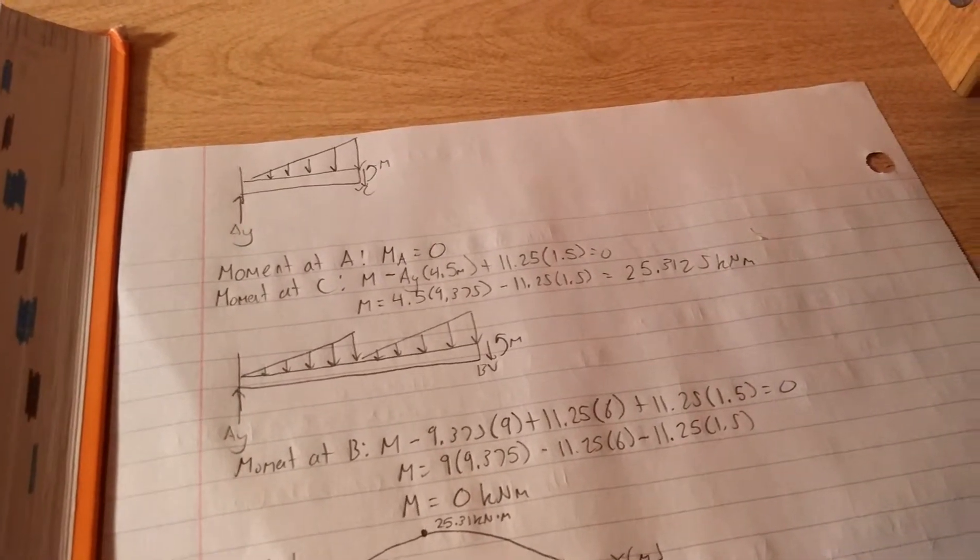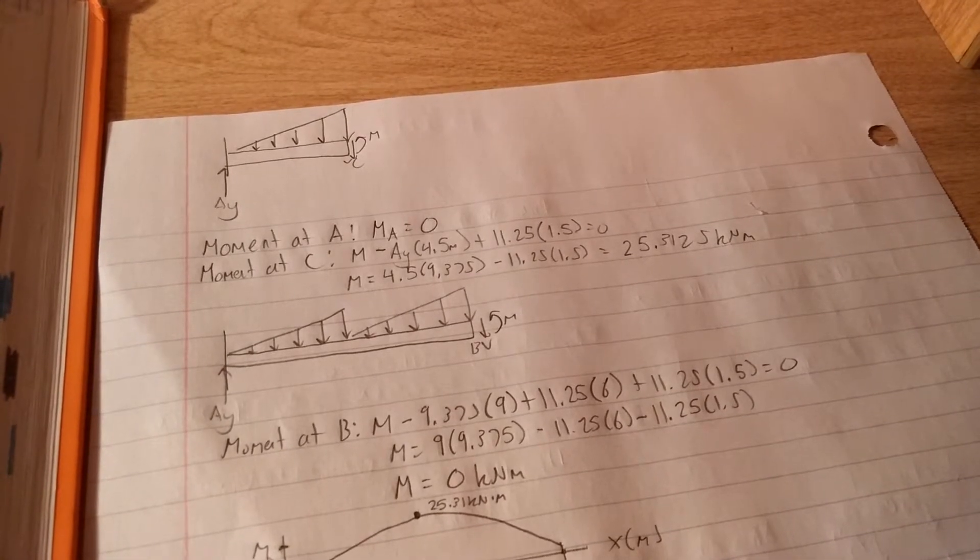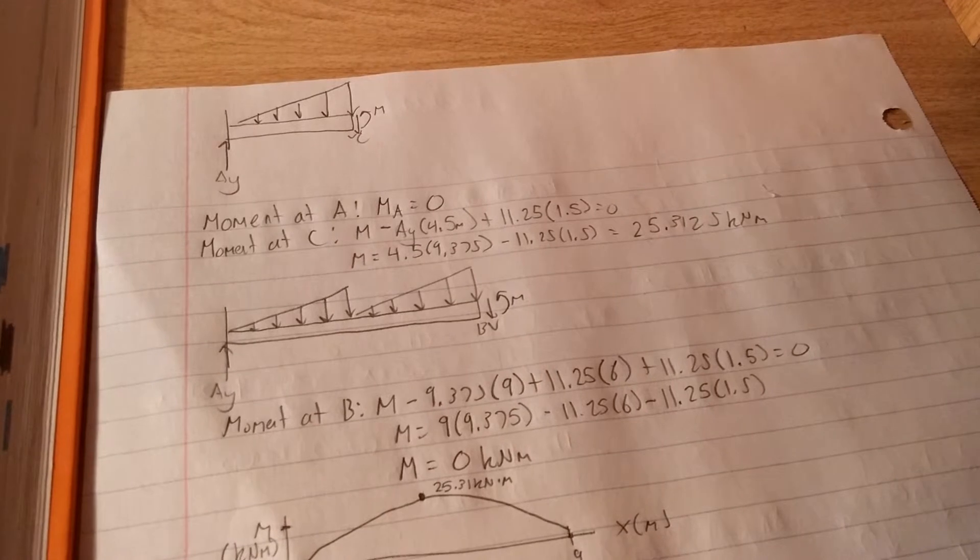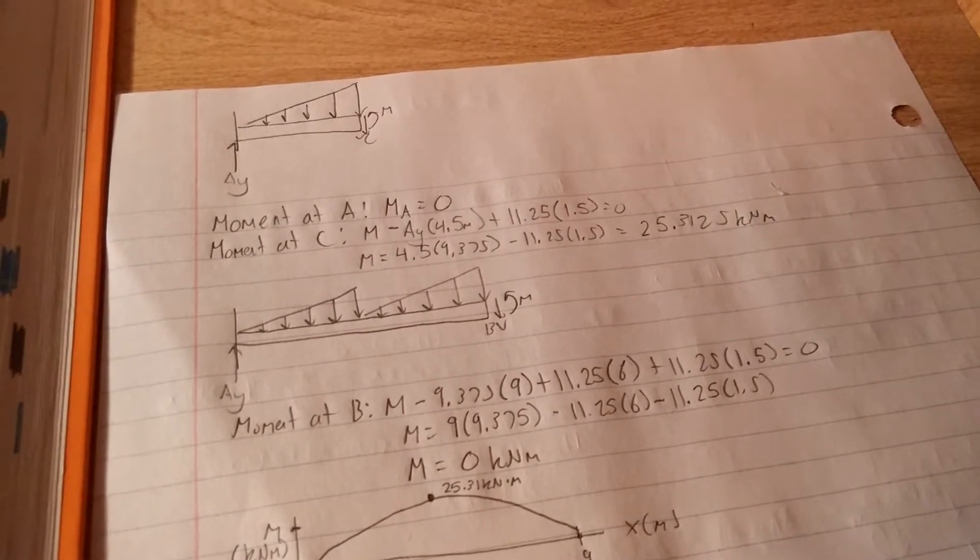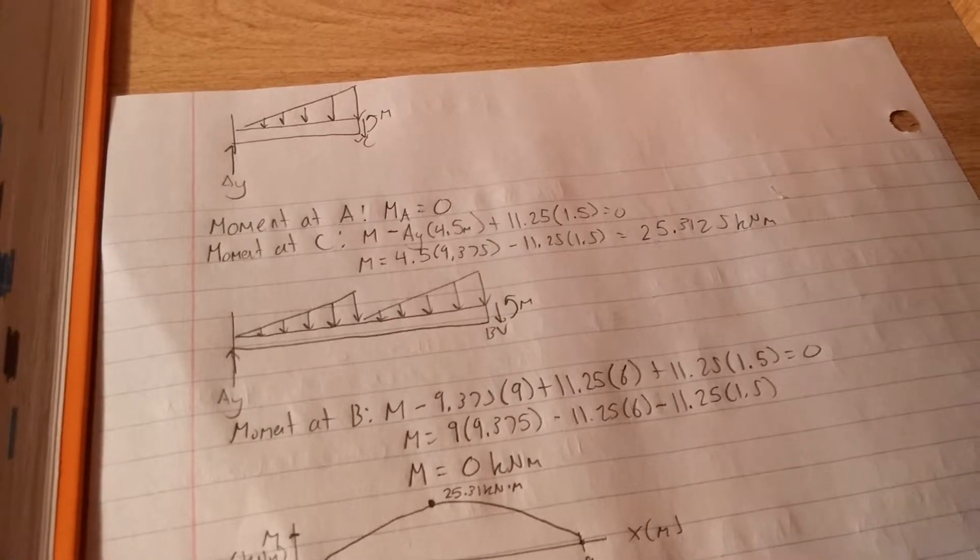And like I said, the centroid of a triangle is one-third from the base. So we multiply that by 1.5. Figure out the algebra, and you find that the moment at C is 23.3125 kilonewton meters.